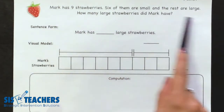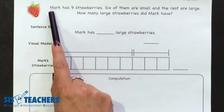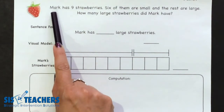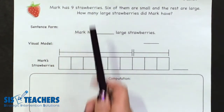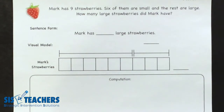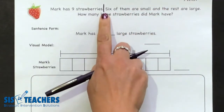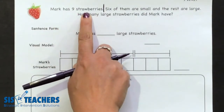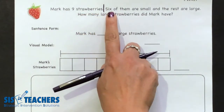Once the story problem is read aloud by the teacher or the student, you want to start to read the story problem a little bit slower. 'Mark has nine strawberries.' That's a new piece of mathematical information and we would like students to pause here and create a chunk. A chunk is just a line that's going to help us know we have some new mathematical information in our story.